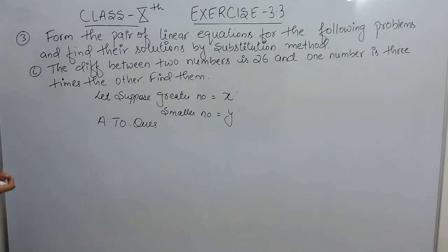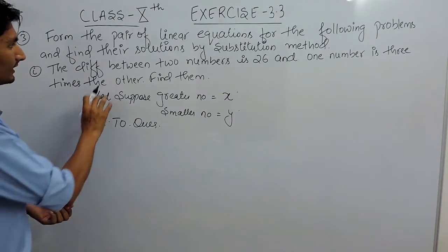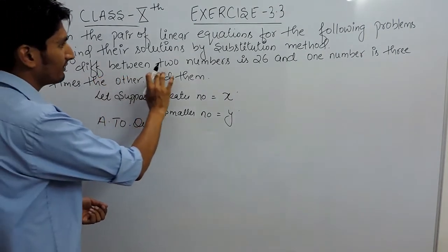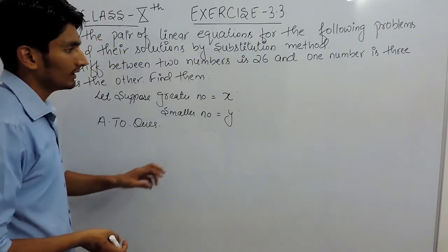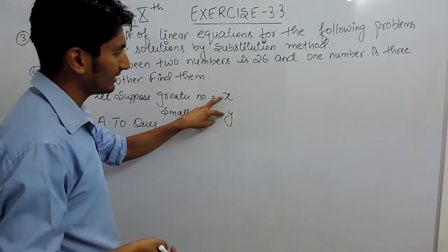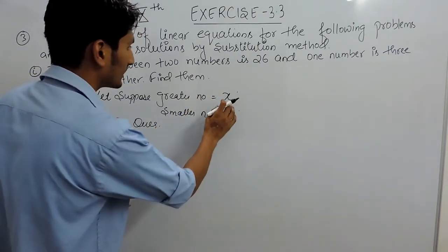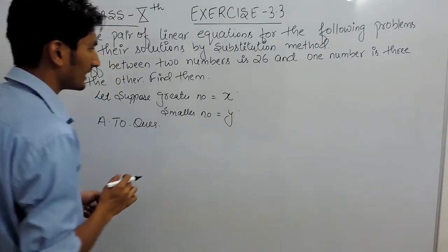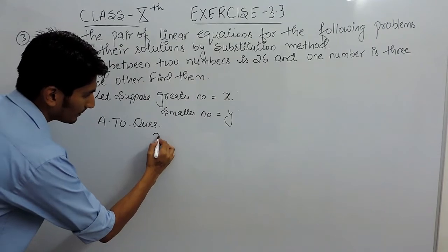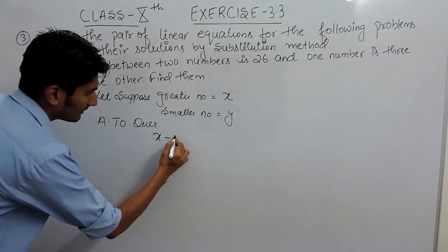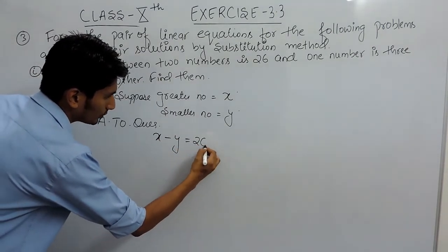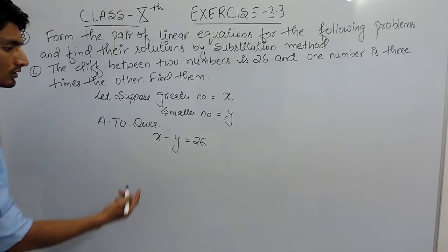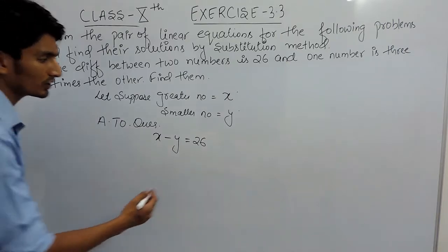In the first part it is given that the difference between two numbers is 26. Because the greater value is x, if we subtract y from x we will get 26. So x minus y equals 26. This is the first equation.